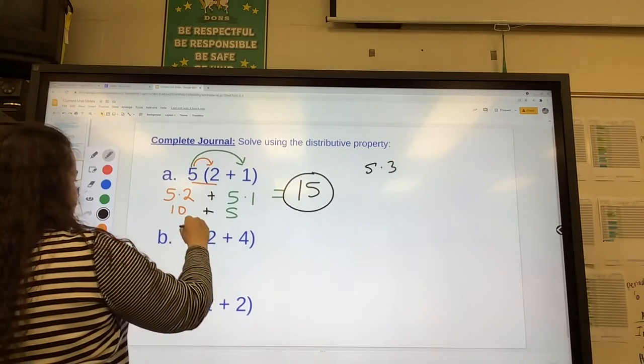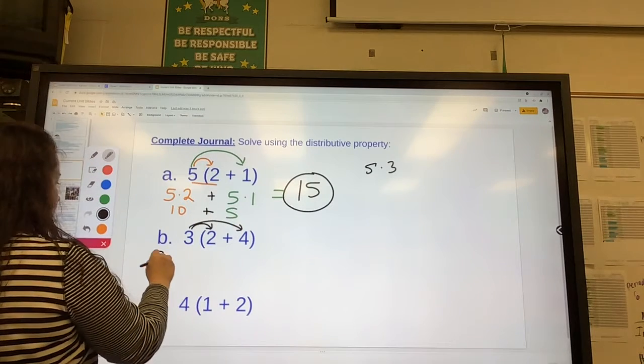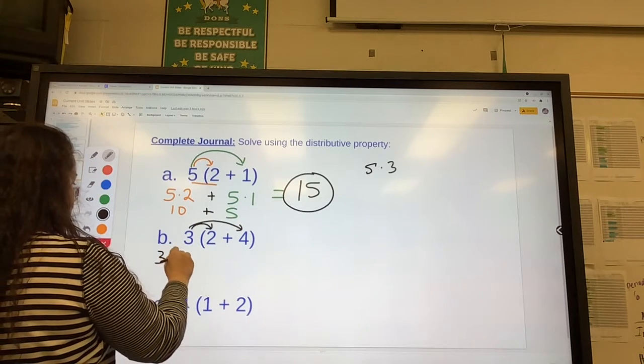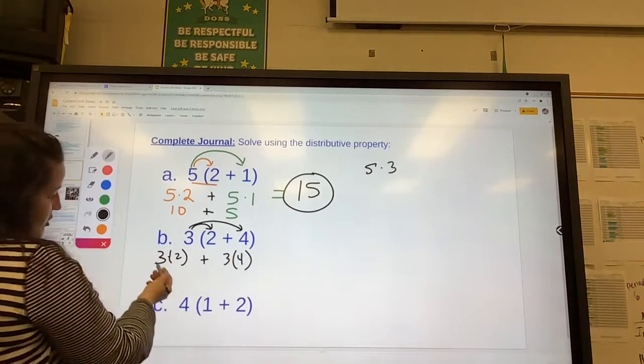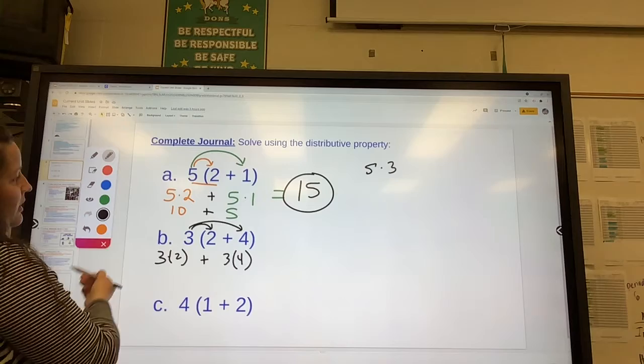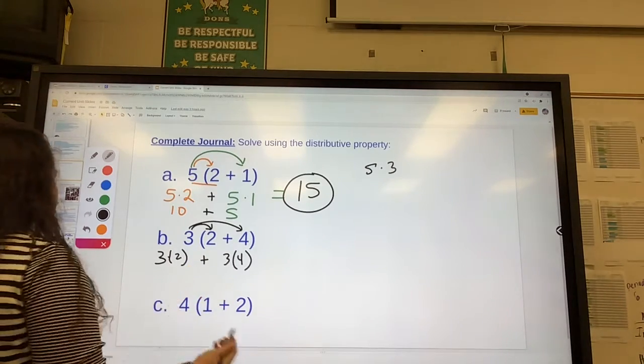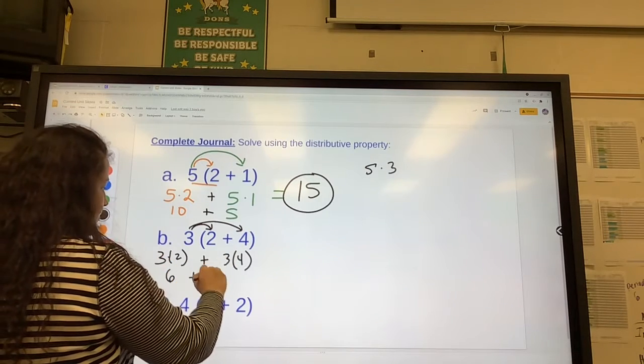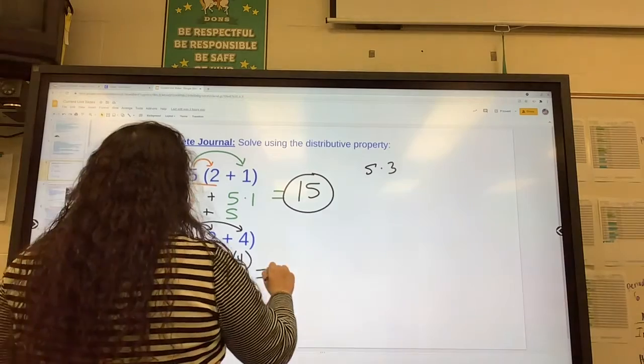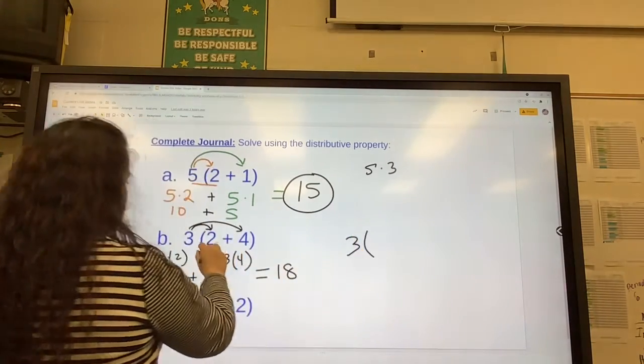Same thing, we're going to use the distributive property. So 3 times 2 and 3 times 4. I'm going to use parentheses now, and I'll start using these as well, so when you do it on a computer you can follow the same way. 3 times 2 is 6, plus 3 times 4 is 12. That would get 18. You could shortcut 3 times 6, which would get you 18 as well.